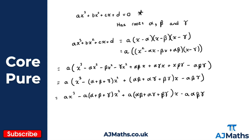Do take your time when working through these types of questions — it's very easy to make a mistake, for example forgetting to multiply through by a. Now I can compare the coefficients of this cubic to the cubic we started with. So b is equal to minus a times alpha plus beta plus gamma, meaning b equals minus a times the sum of the roots.